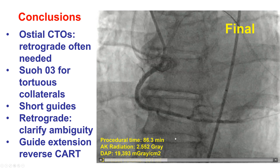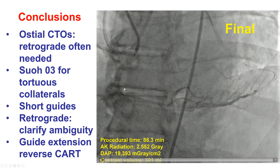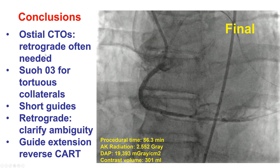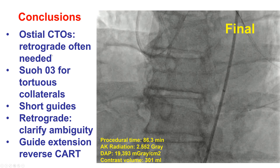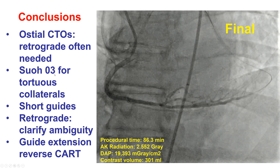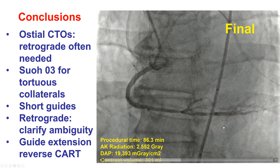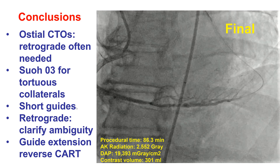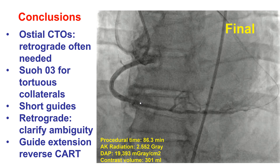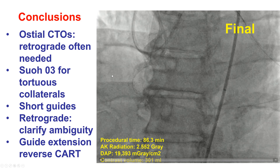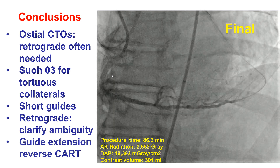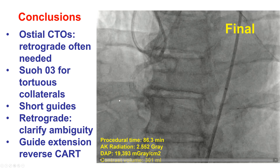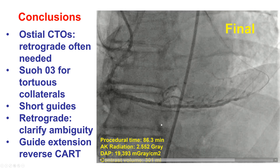The patient had essentially resolution of his symptoms after the procedure. Several lessons from this case: first, for aorto-ostial CTOs that are hard to engage, a primary retrograde approach may be needed for crossing. The SUO-03 wire is very useful for crossing highly tortuous collaterals, as in this epicardial collateral. Short guides are important when going through epicardials, otherwise you may run out of microcatheter space. Finally, reverse CART can be challenging, and there are different ways to make it successful, such as using a larger balloon, changing the re-entry location, and using a guide extension, leading to successful retrograde crossing and procedure completion.